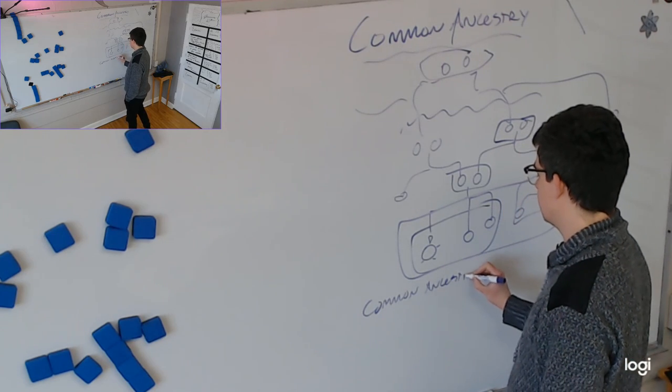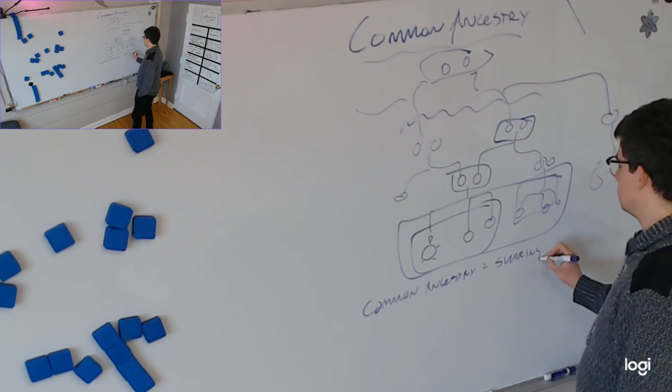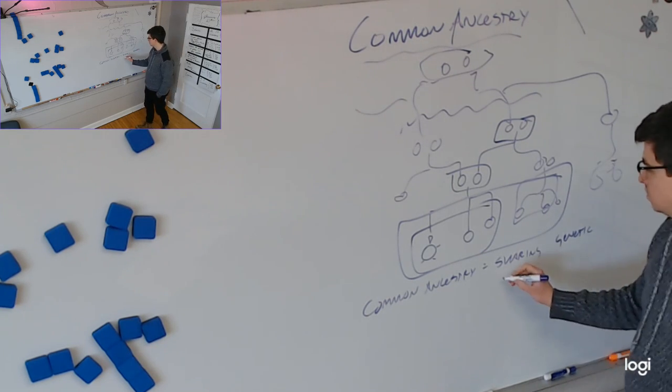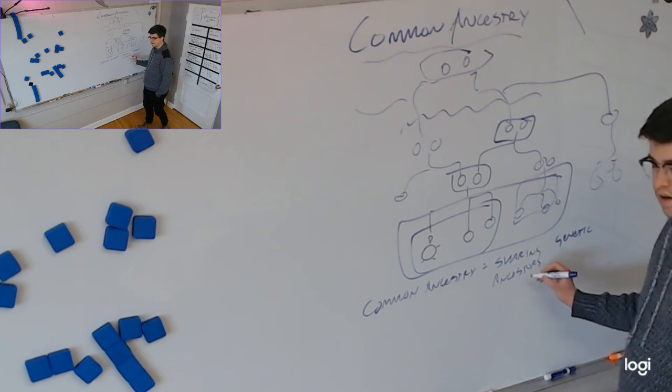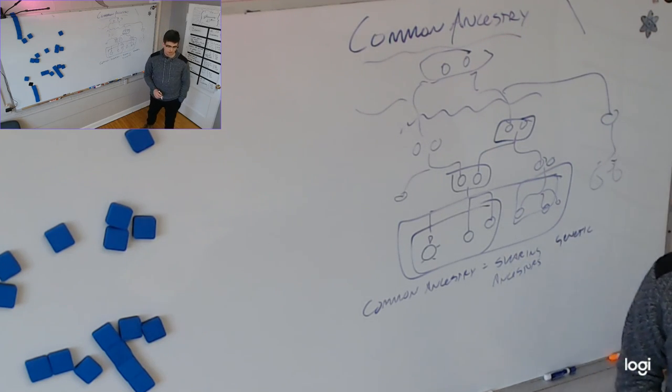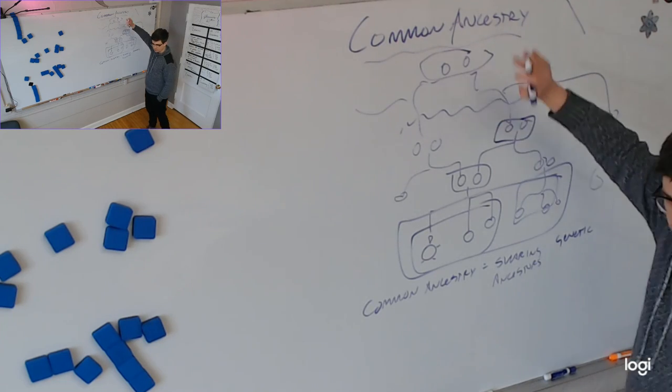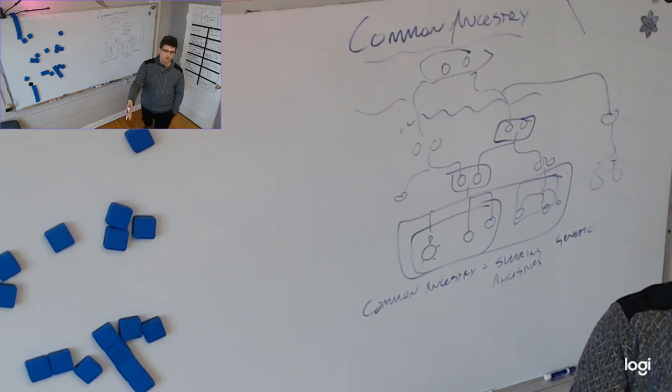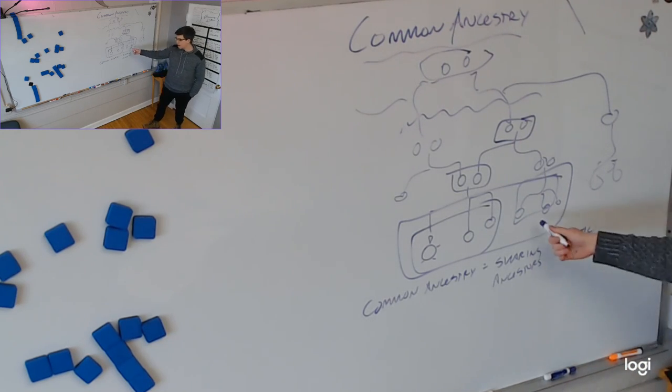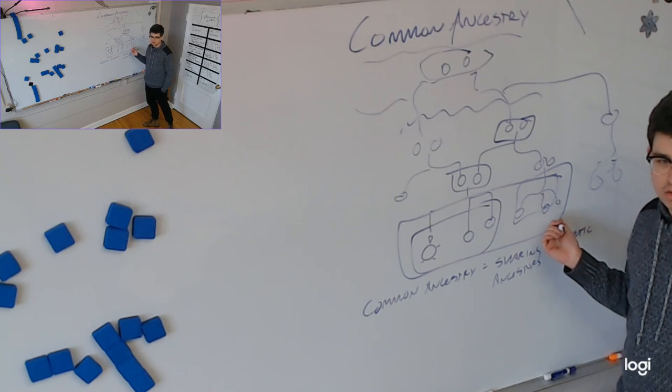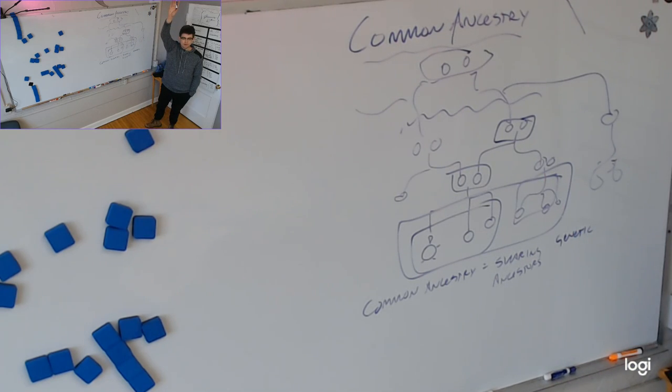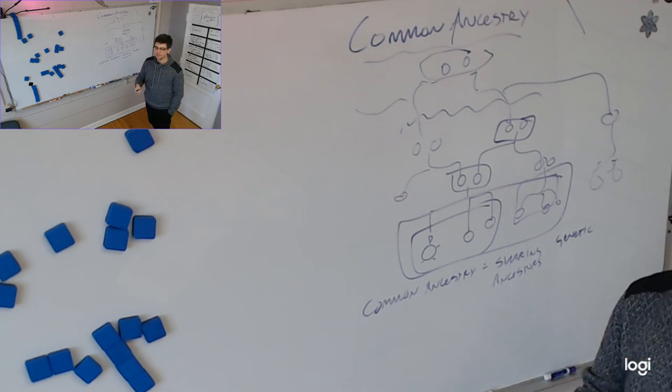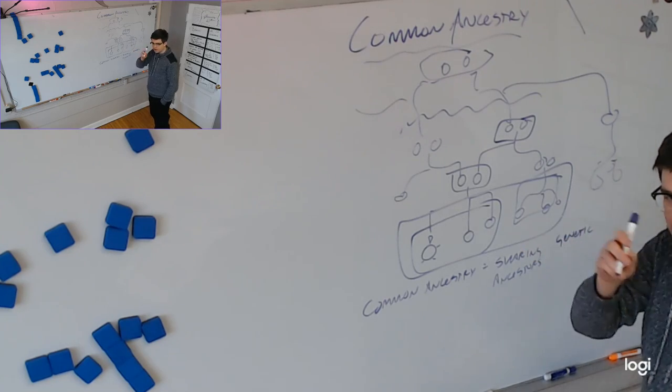Common ancestry is just sharing genetic ancestors. Their genes are inside of you. Sharing genetic ancestors. No one disagrees about this. This is not even a realm of science. No one's Facebook uncle is going to say there ain't no such thing as cousins. Everyone agrees with this. You know there are cousins. You have cousins. Who doesn't have a cousin? You all have cousins. No one disagrees about this. Now here's where it gets dicey. Here's where people do start to disagree.